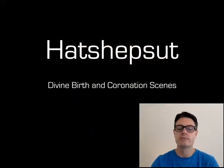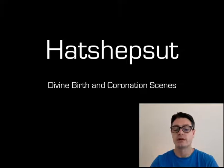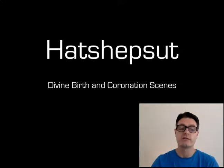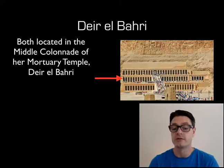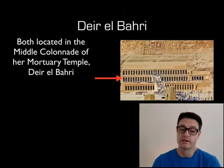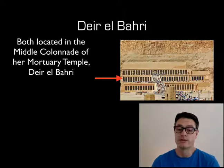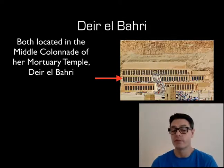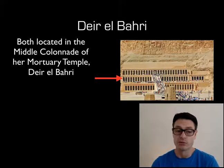In this video on Hatshepsut, we'll be looking at a couple of really important scenes that Hatshepsut uses to legitimize her claim to the throne. They're called the Divine Birth and the Coronation Scenes, both of which are located here at Deir el-Bahari, which is Hatshepsut's mortuary temple, in the middle colonnade — that middle section towards the back up on the wall.